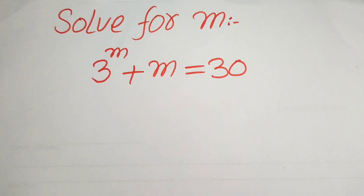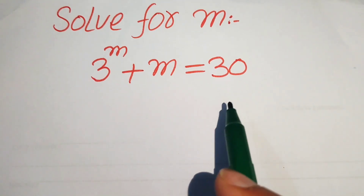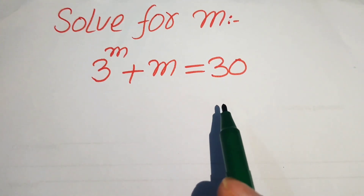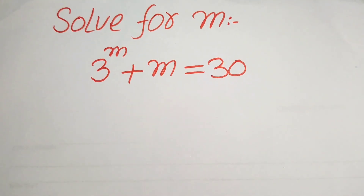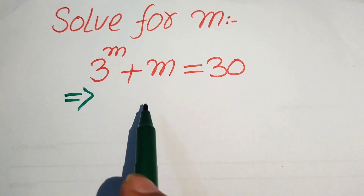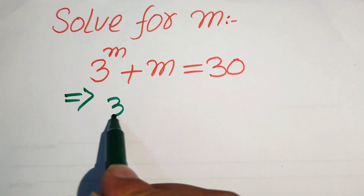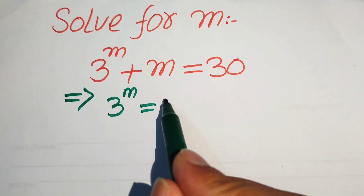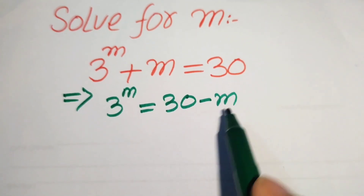Hello everyone, welcome. We solve this algebra problem where 3 to the power of m plus m equals 30, and we solve for the value of m. The very first step is to move the plus m to the right hand side, giving us 3 to the power of m equals 30 minus m.